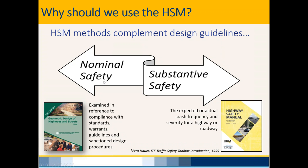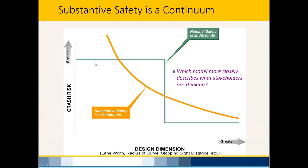Why should we use the HSM? We have nominal safety — compliance with standards — and substantive safety — expected or actual crash frequency for a particular roadway. Nominal safety is absolute: either you're meeting standards or you're deficient. But with the HSM, we can quantify safety on a continuous scale based on lane widths, curve radius, or stopping sight distance, and derive a decision-making breakpoint to determine how to proceed.